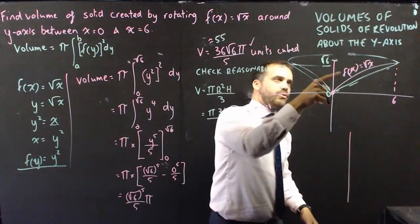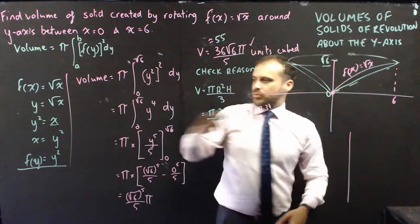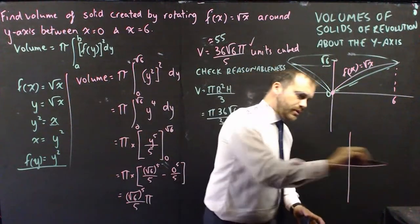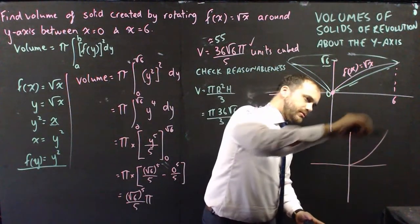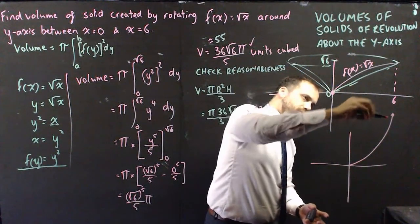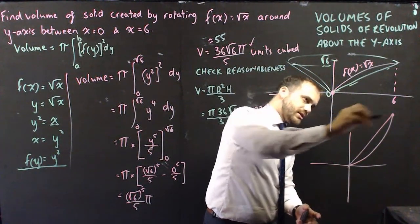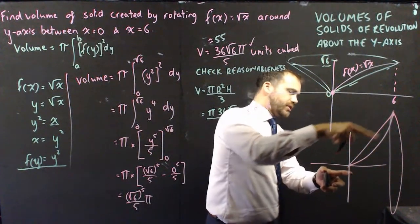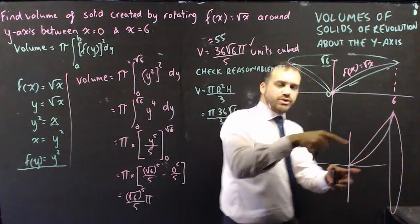Remember that this is y equals root x, which we know the inverse of is y squared. When you draw a parabola, it looks a little bit like that, right? Now, if I drew a straight line here, so there's my volume of solid of revolution, you can see there's a big chunk of it missing here.